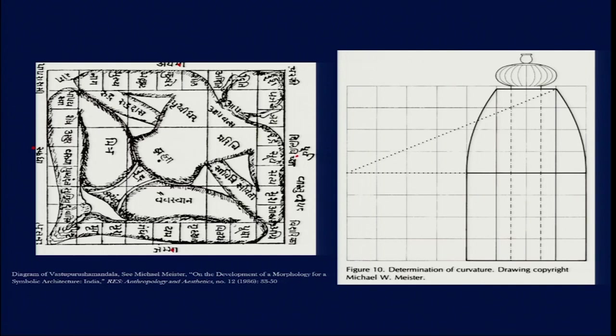There are also the other four intermediate directions, so altogether there are eight directions which we find to be very important in this ground plan as well as in the Hindu idea of the universe. This entire ground plan actually comes to represent, or to be a metaphor of, the Hindu cosmos.